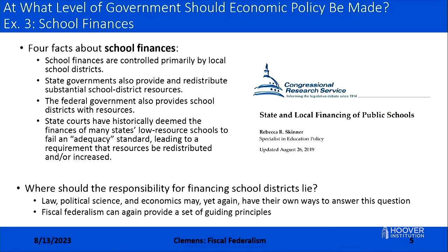The third motivating example is school finance. Schools are primarily controlled at the local level by school districts, with about half of their financing coming at the local level. About 45 percent comes from state governments. The federal government also kicks in some funding along with rules attached to receipt of those funds. State courts have historically deemed the finances of many low-resource schools to fail an adequacy standard embedded in the state constitution, leading to requirements that resources be redistributed or increased in those schools. Fiscal federalism provides guiding principles for economists as we consider where authority for financing school districts should lie.